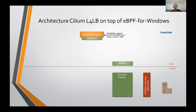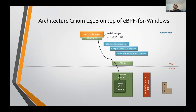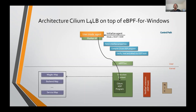The agent also gets the interface name as an input. Once it receives these inputs, it fetches the interface properties, then compiles the eBPF program using the interface properties and the mode provided, and then verifies, loads, and attaches the program to the XDP hook. As part of loading the program, the required maps are also created in the kernel.